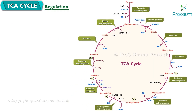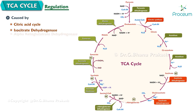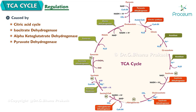Regulation of the citric acid cycle is by citrate synthase, isocitrate dehydrogenase, and alpha-ketoglutarate dehydrogenase. Pyruvate dehydrogenase is also considered a regulatory step of the citric acid cycle.